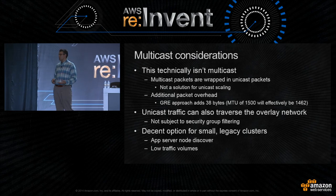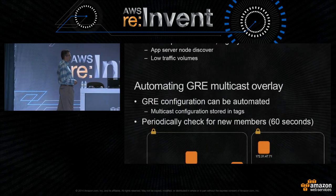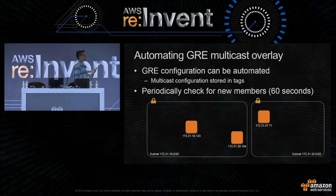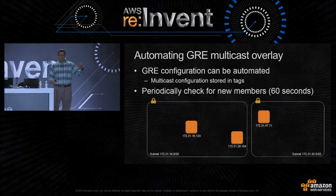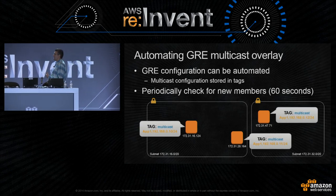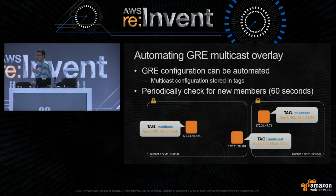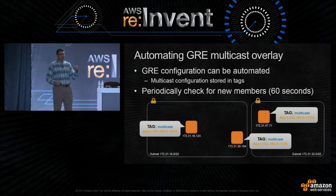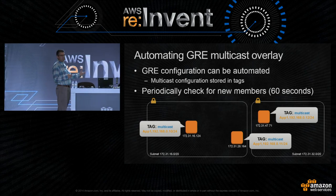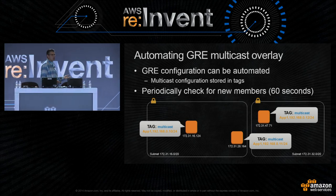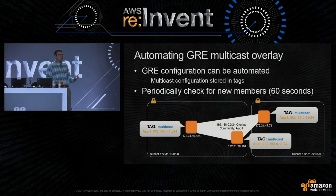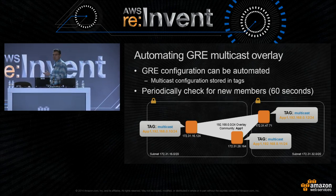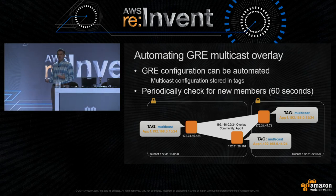Some considerations: technically this isn't multicast — we're creating multiple unicast packets for every member of the multicast group, so it's not a solution for unicast scaling. There's also additional packet overhead from the tunneling mechanism, and unicast traffic over the overlay network is not subject to security group rule filtering, so you need to be mindful of traffic protection. However, it may be a decent option for small legacy clusters needing node discovery or low traffic volumes. This can be automated — using the GRE example with tagging, you tag instances as part of a multicast community, specify the community name and overlay IP address, and scripts automatically discover nodes and create the network.